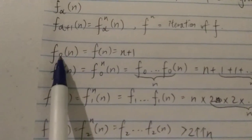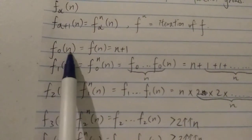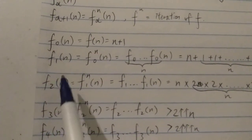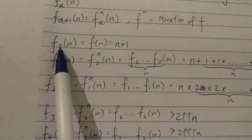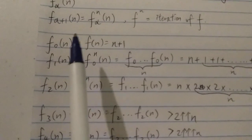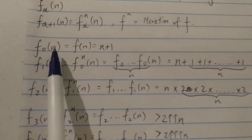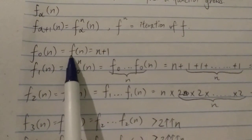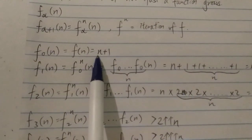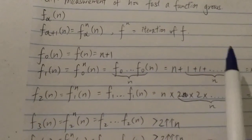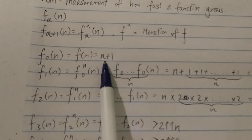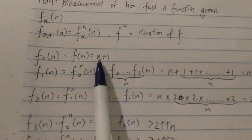The fast-growing hierarchy starts with F(0, n). It uses positive integers — I've never seen something like F(0.5) or F(1.5). F(0, n) basically just means n plus 1. So this is the most basic, the first level — you can say the fast-growing hierarchy at this level is just addition: n plus 1.